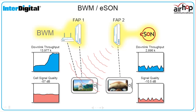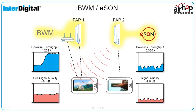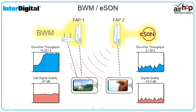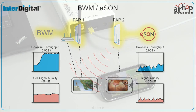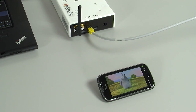With eSAN enabled, UE2's signal strength is reduced, but the quality of service is maintained. UE2's video continues to play smoothly.